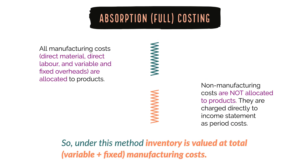Now let's move on to absorption costing. In absorption costing, all manufacturing costs, whether they are fixed or variable, are taken into account to calculate product costs. Non-manufacturing costs are not taken into account for calculating product costs. Rather, they are charged to the income statement in the period in which they are incurred. In other words, they are treated as period costs.